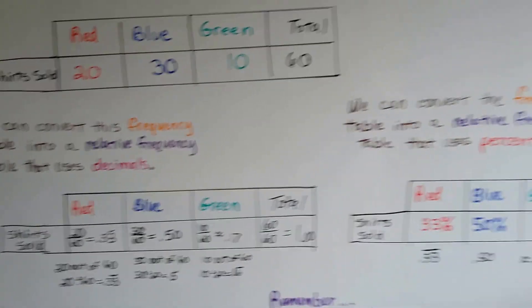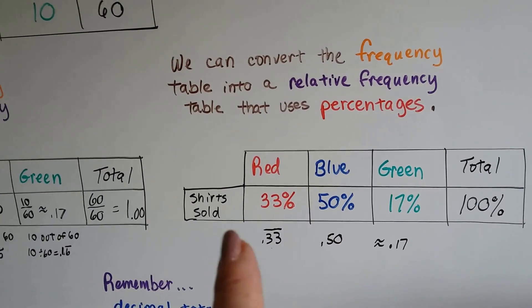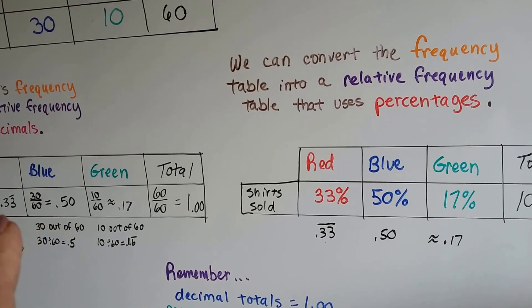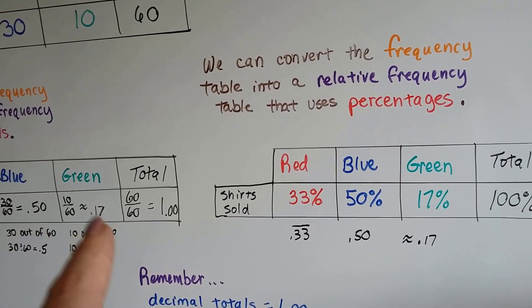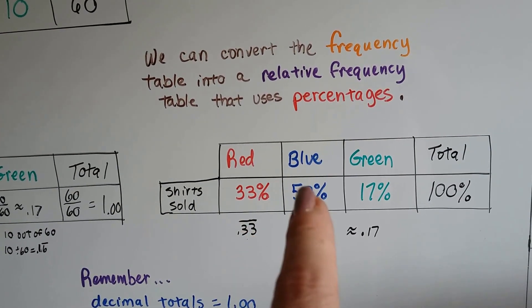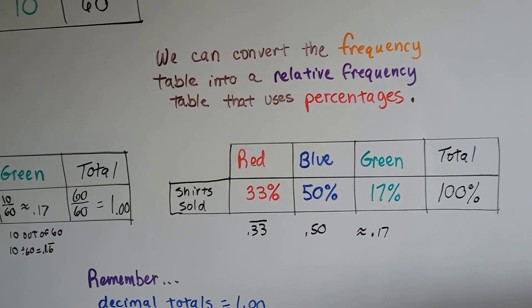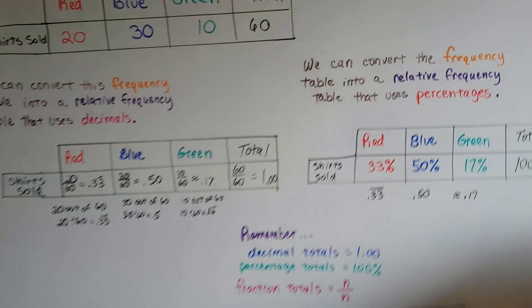We can do the same thing again and turn it into a relative frequency table that's using percentages. Because this .33, .50, and .17 can be turned into percentages as 33%, 50%, and 17%. And when we add them together, we get 100%, like we're supposed to, and it works out real well.